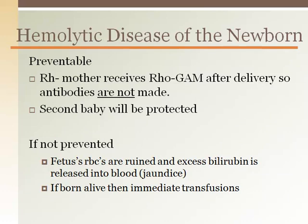Hemolytic disease of the newborn can occur when the mother is Rh negative and the baby is Rh positive. Although the baby's blood does not mix with the mother's blood, the mother responds to the baby's Rh positive blood by forming antibodies against the Rh factor. The first pregnancy this occurs, there are not any complications. However, the next time the mother is pregnant with an Rh positive baby, that Rh positive baby will be in danger of the mother's antibodies attacking its blood. There are no problems for an Rh negative baby.